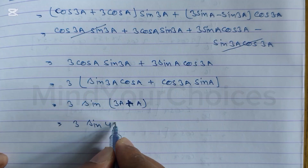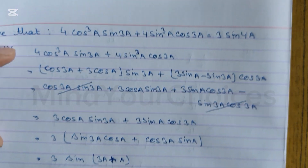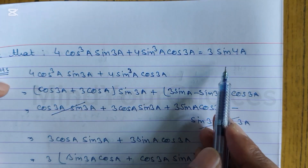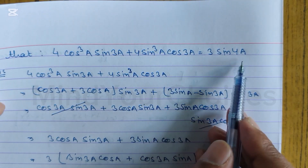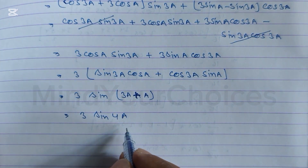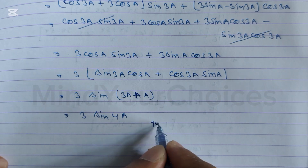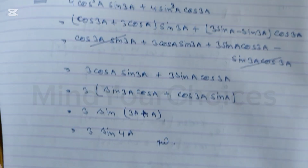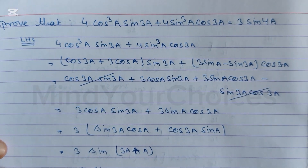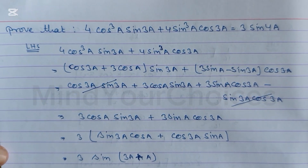Adding them gives 4a, so we get 3sin4a. We had to prove three sin4a as RHS, and here we get 3sin4a. Hence LHS equals RHS. Proof complete. Hope you understand this question.